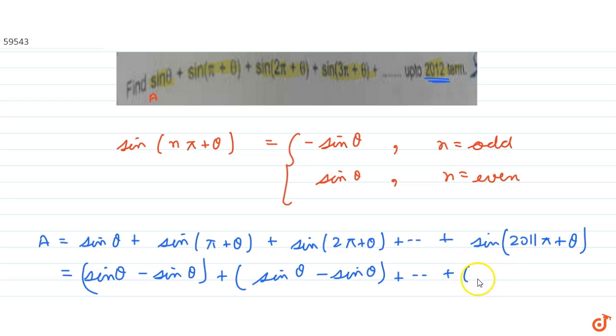See, the second last term will be sin theta and this last term is minus sin theta. So if we see, all these terms cancel out and the value for A will be 0. So 0 is the answer of this question.